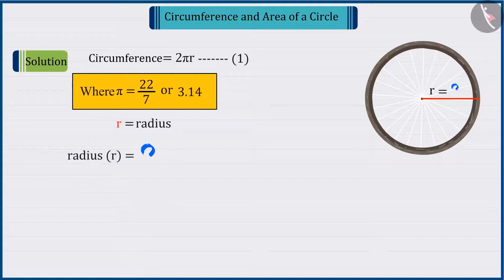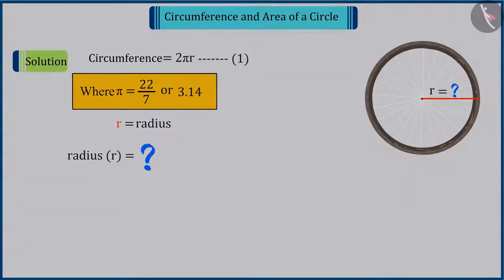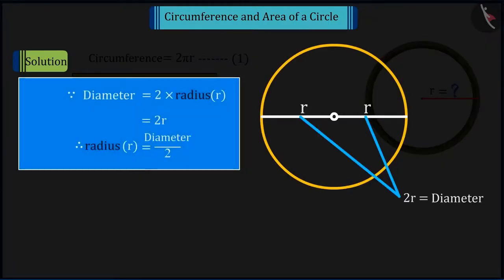But here, the value of r is unknown. So let's find the value of r. We learned in our previous class that half the diameter is the radius.